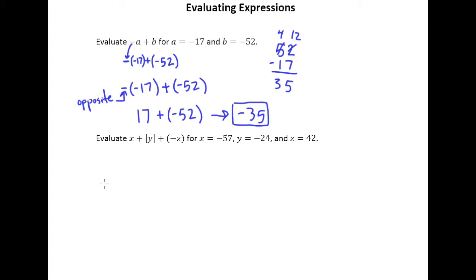So in place of x I want to put negative 57. Now you can certainly put negative 57 in parentheses, it's not going to hurt anything. But since it's the very first term in the expression it's not necessary because there are no operation symbols in front of it. Plus, now this is the absolute value of y. So I'm going to have plus the absolute value of whatever y is. Now y happens to be negative 24, so I'll plug negative 24 in there.